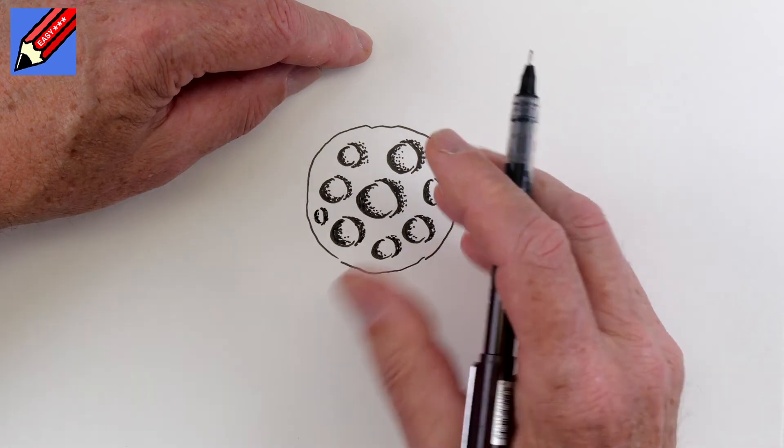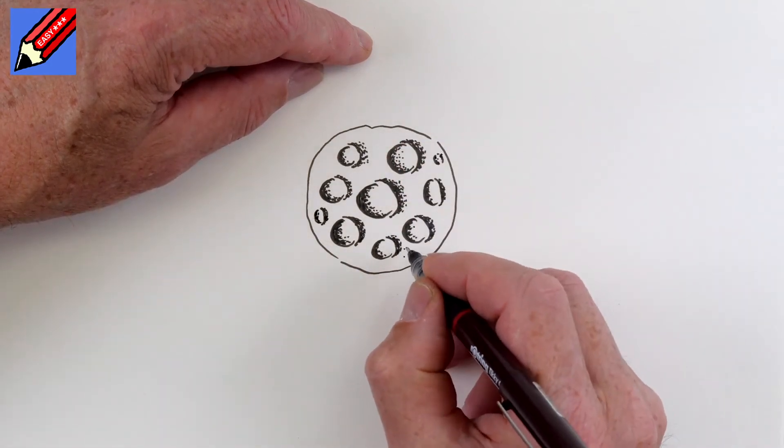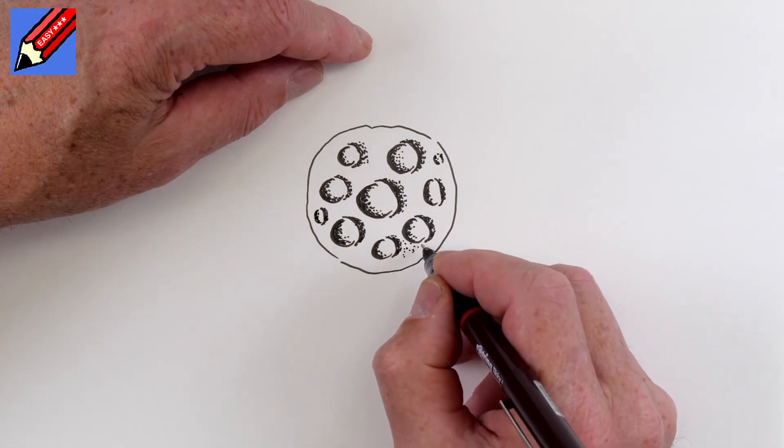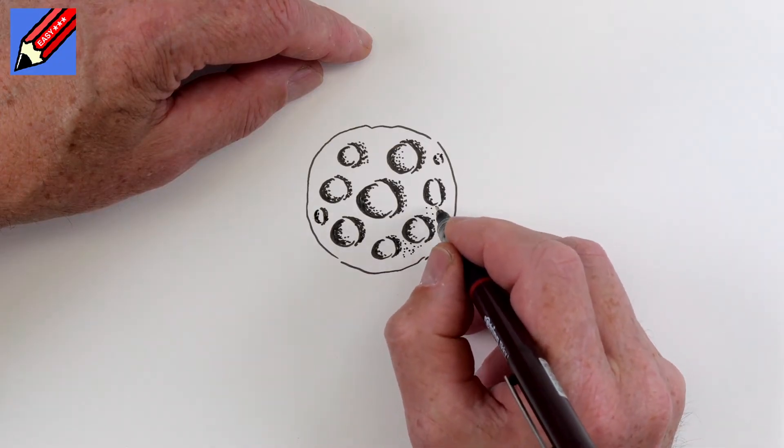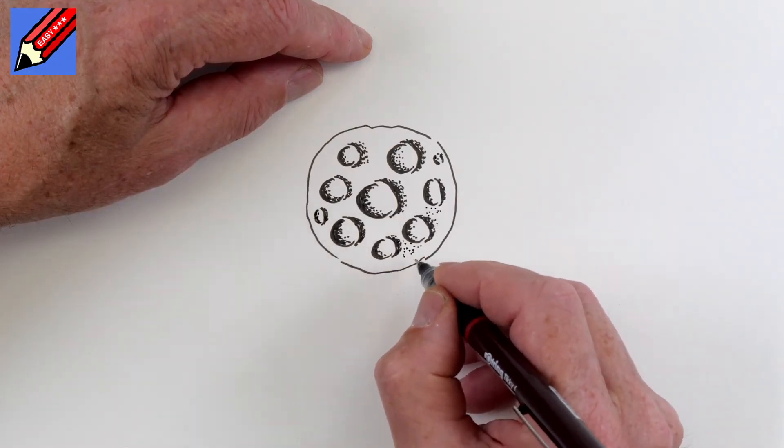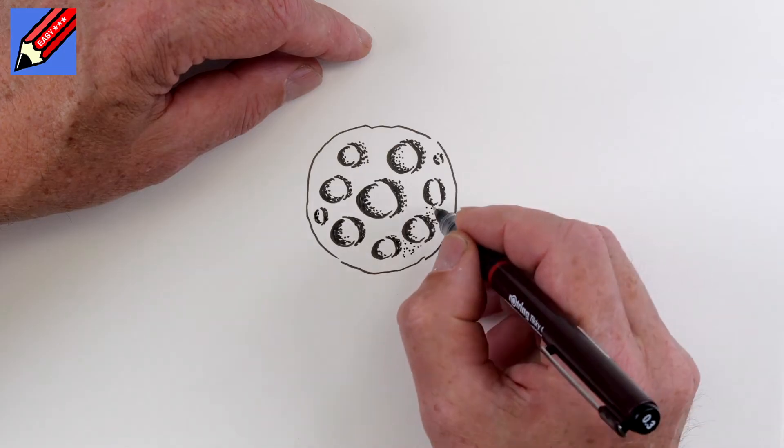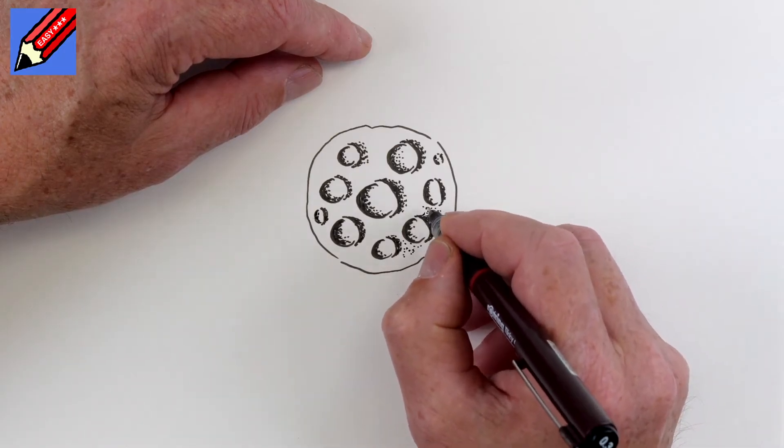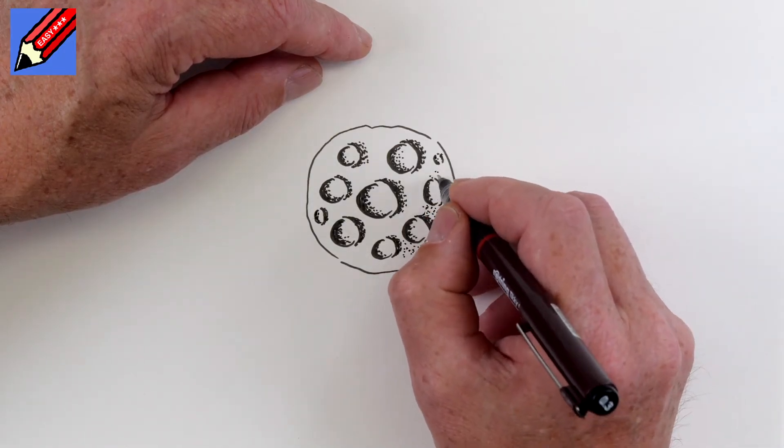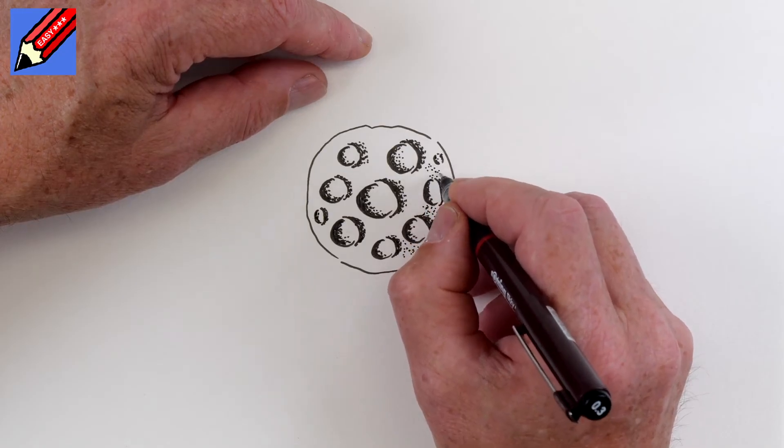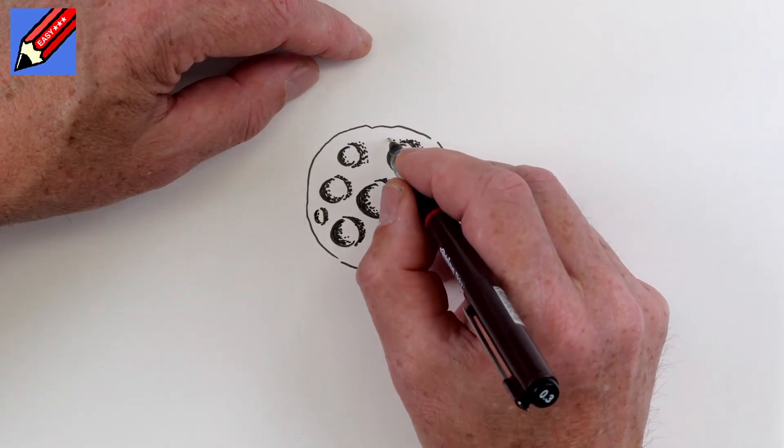And then we need to shade the whole moon. So we're going to use this stippling again. So we don't want any of this stippling in the craters. And I'm going to leave a gap all the way around here with no stippling. So I'm just going to kind of stipple all around here. So this will be the darker part of the shading.